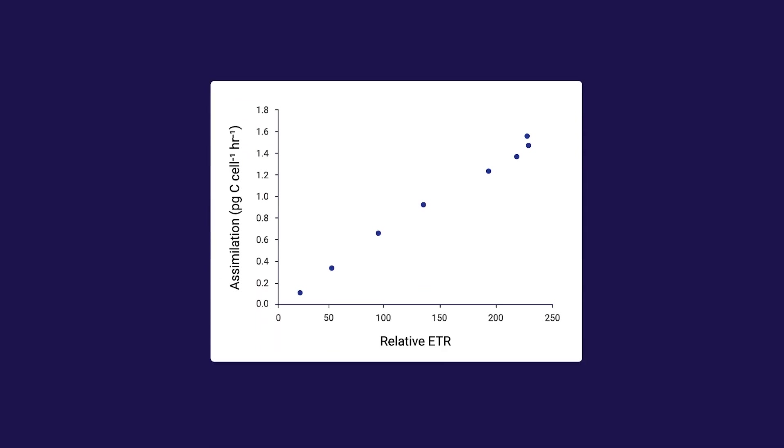Here are the same carbon assimilation numbers but now plotted against the relative electron transport rate. I like to show this because when we measure carbon dioxide and ETR, we generally expect to see a near perfectly linear relationship with changing light intensity even at the highest light intensity.